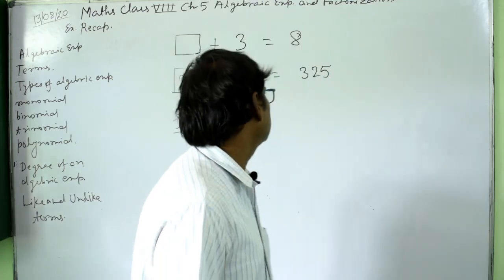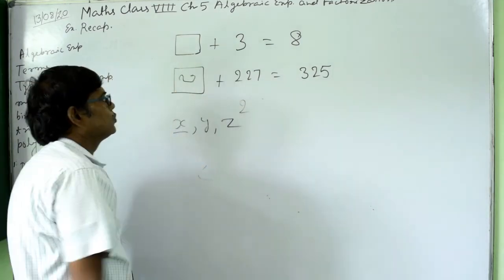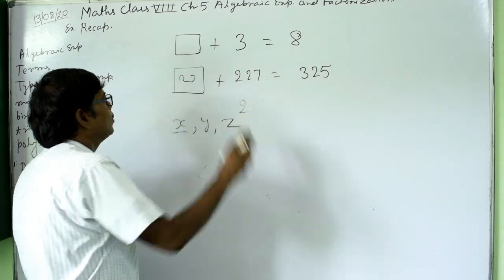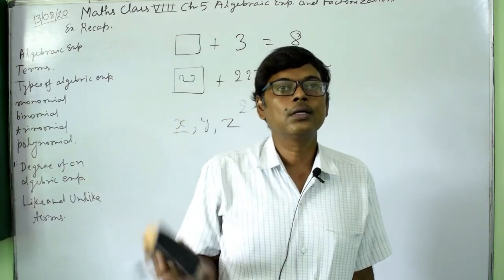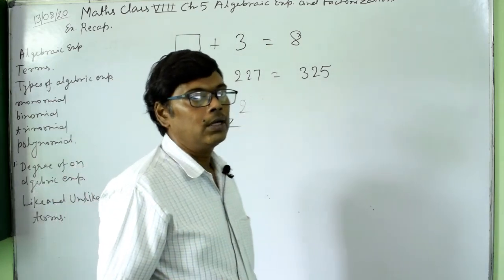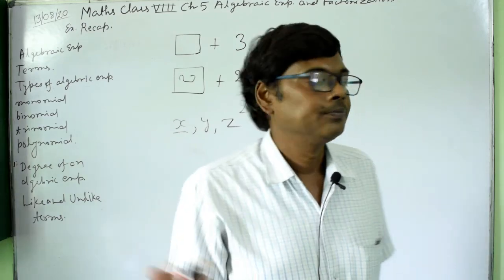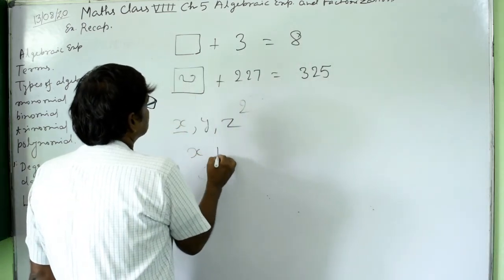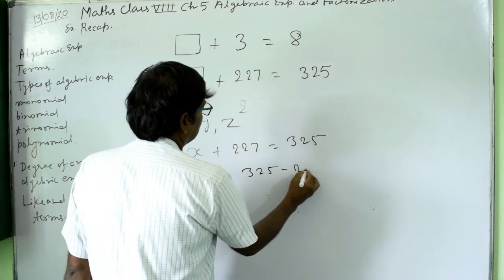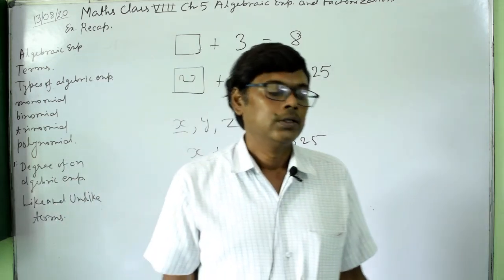In this way we make algebraic expressions. As we grow up, using only the box symbol becomes difficult for complex problems. So we replace those symbols with letters like x. For example, x plus 227 equals 325, so x equals 325 minus 227. Then you can subtract and get the answer.